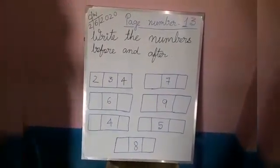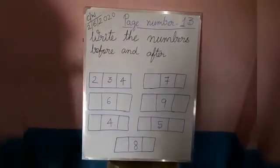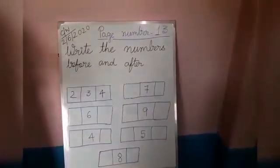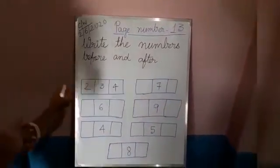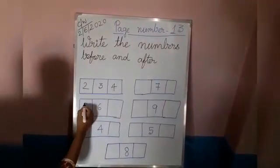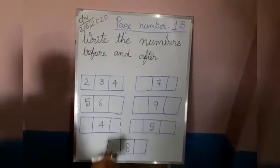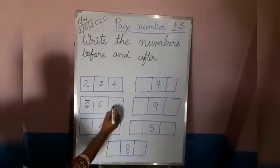Similarly, what is the before number of 6? Yes, do the backward counting. Before 6 there is 5. Yes, so you write here 5. What is there after 6? After 6 there is 7.